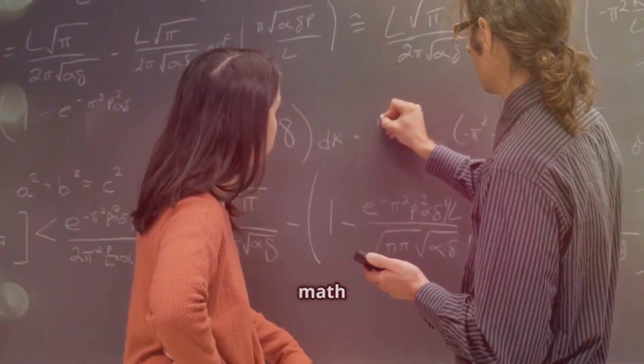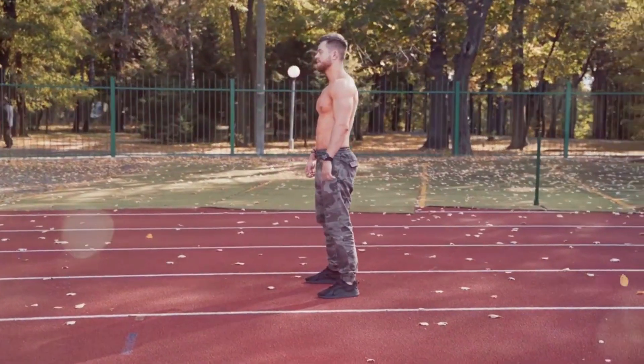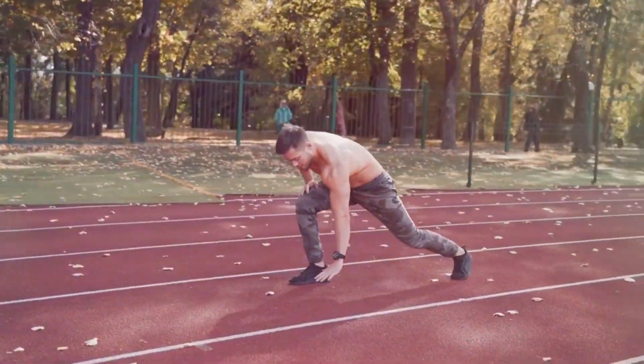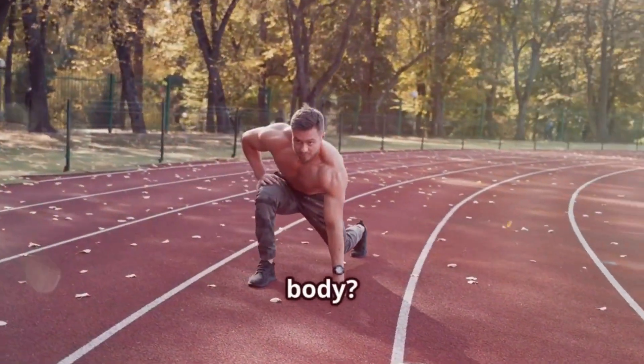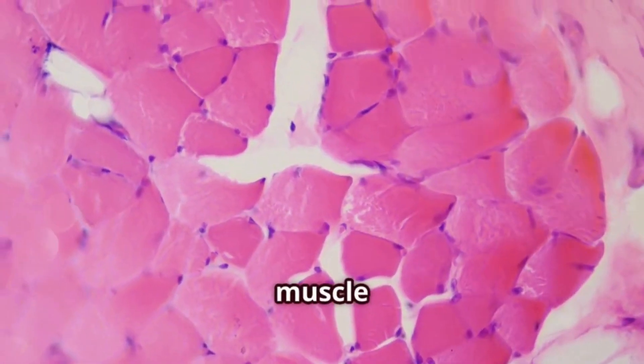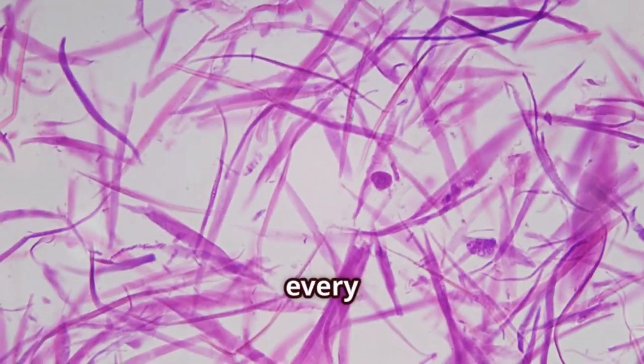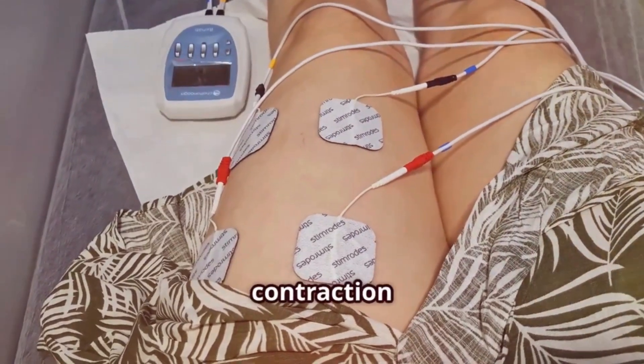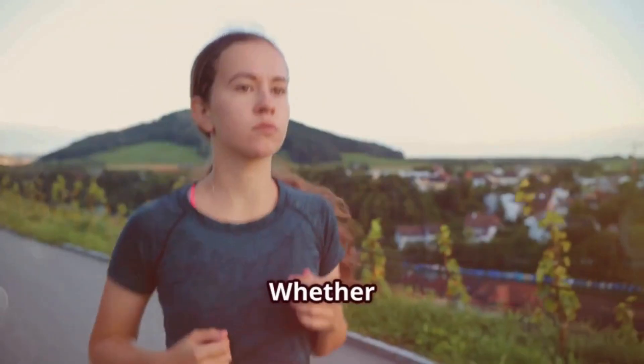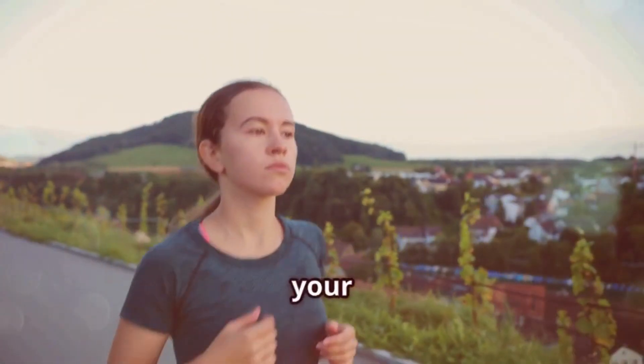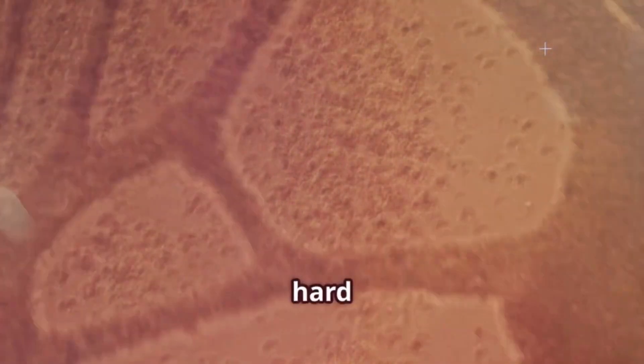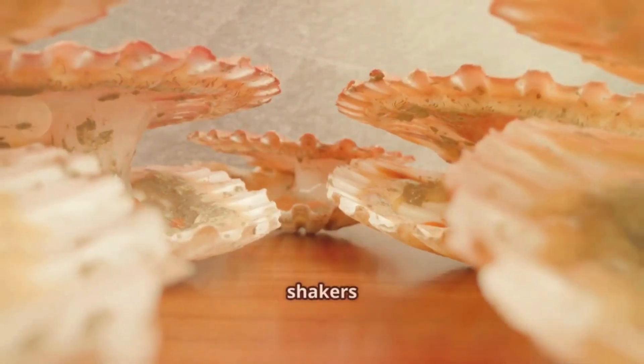Ever wonder how you move your body? Get ready to meet the muscle cells—the powerhouses behind every single move you make. These cells are packed with contractile proteins that allow them to shorten or lengthen, resulting in muscle contraction and relaxation. Muscle cells are elongated and come in different types, each specialized for different types of movement. Whether you're running a marathon or simply blinking your eyes, your muscle cells are always hard at work.